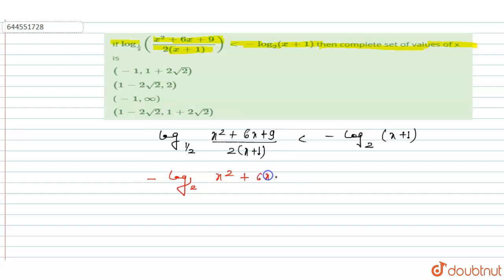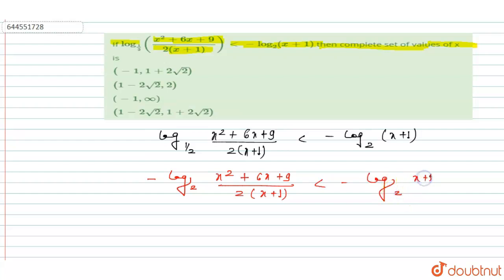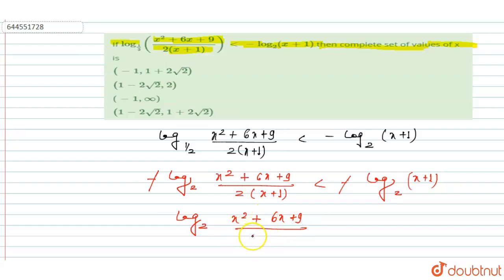We have x² + 6x + 9, and this value is greater than log base 2 of (x + 9) / (2(x + 1)), and this value is greater than log base 2 of (x² + 6x + 9) / (2(x + 1)), which is greater than log base 2 of (x² + 6x + 1).